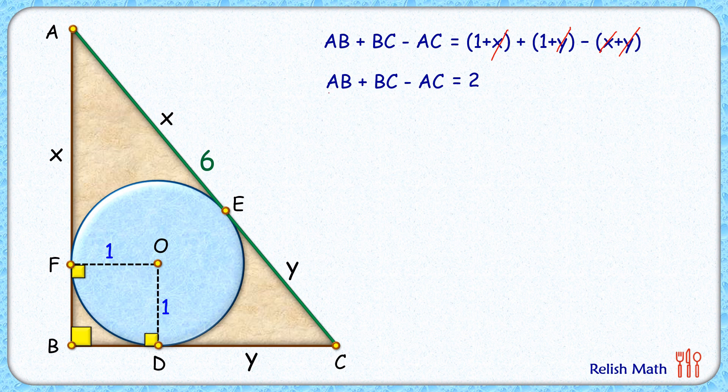In fact it's a formula for inradius of a right angle triangle: inradius is sum of side lengths minus hypotenuse divided by 2. Now here AC length is 6 cm, it's given to us, and thus AB plus BC will be 8 cm.